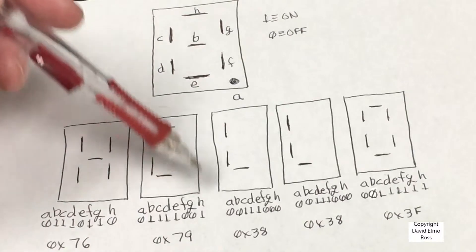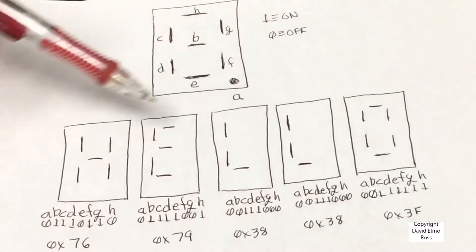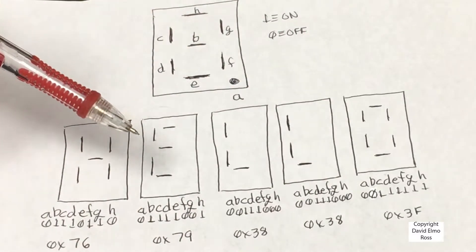Then we have zero, zero, one, zero, zero, one, because this is off, this is off, this is on. So you should be able to decode any kind of characters that you want to put on the display.